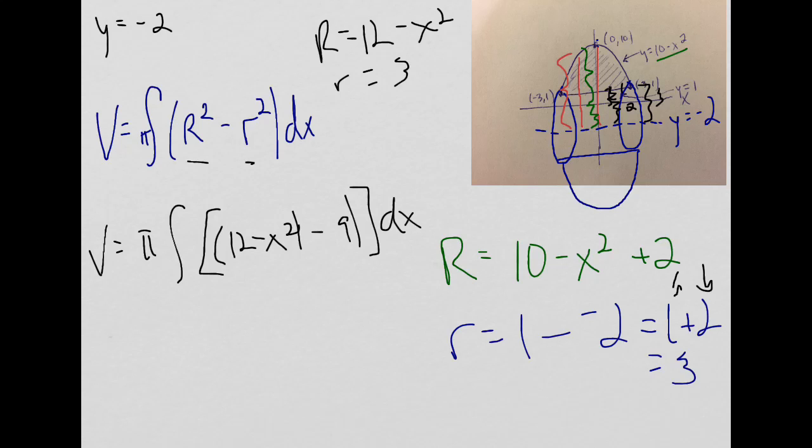The last thing I have to do is take care of my bounds of integration. Well, I'm doing dx slices like this. So you think about where we're starting with dx. We're starting at that negative 3. Where we end in, we're going to the 3. So I'm going to go minus 3 to 3 like that. Now we're done.